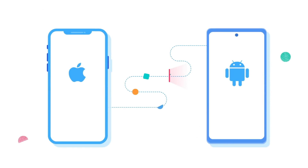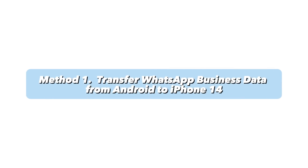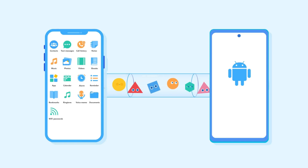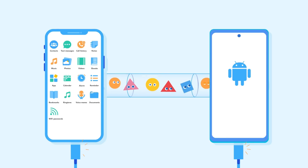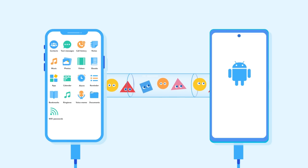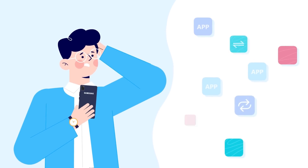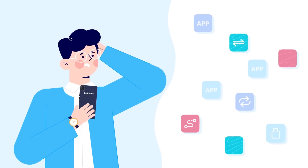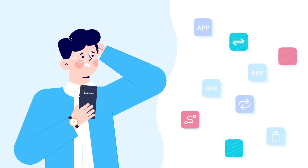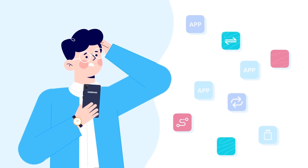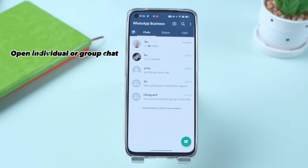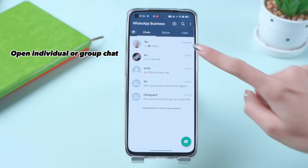The first method is quite simple and straightforward. WhatsApp Business data transfer between Android and iPhone can be carried out using a built-in WhatsApp function. This function is known as the export option. You can filter out unnecessary chats. Here are the steps to export.